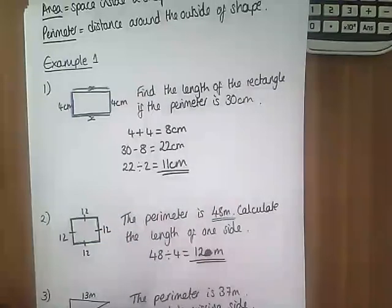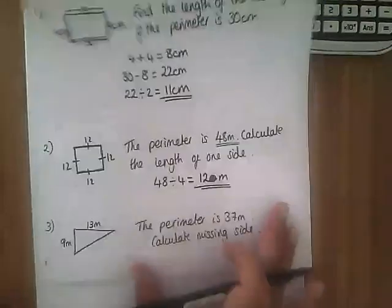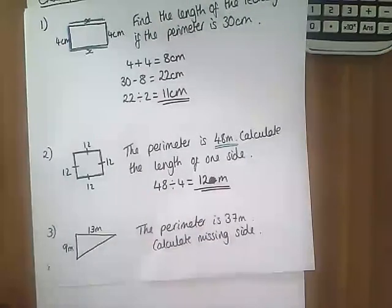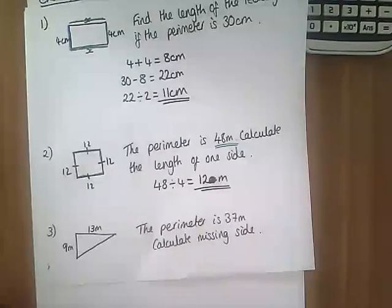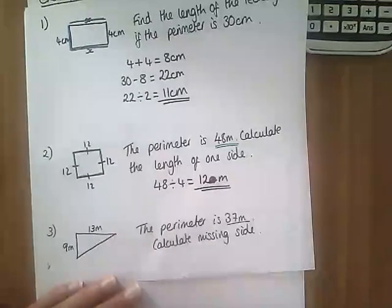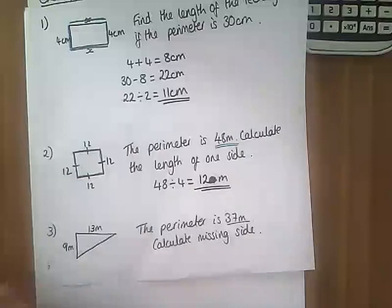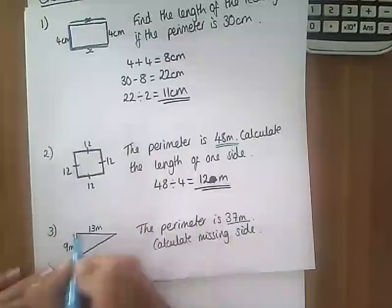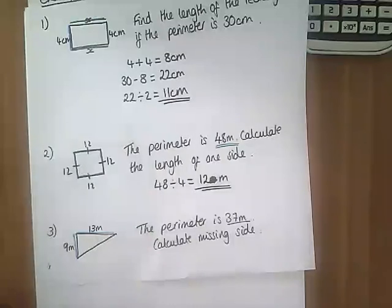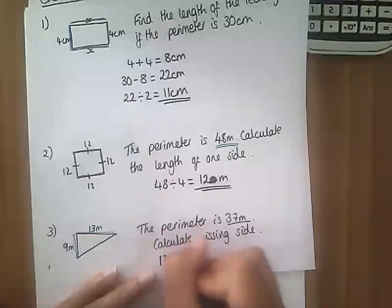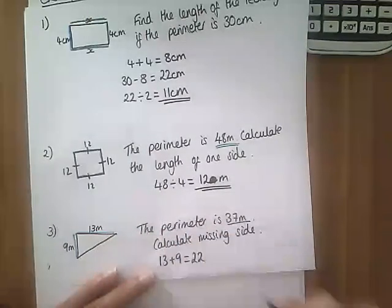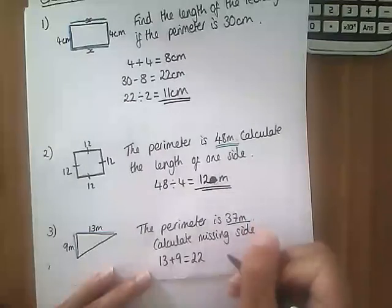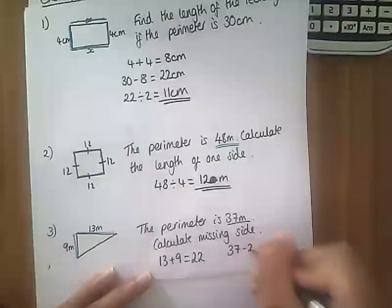The last one for perimeter we've got a triangle and it says the perimeter is 37 meters, calculate the missing side. So far we've got that this is 9 and this is 13, so what have we got in total? Well 13 plus 9 makes 22.